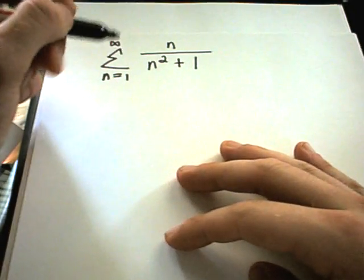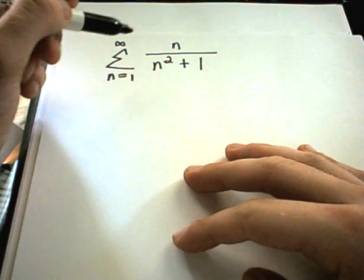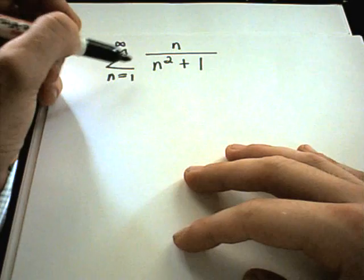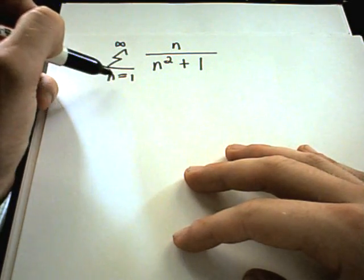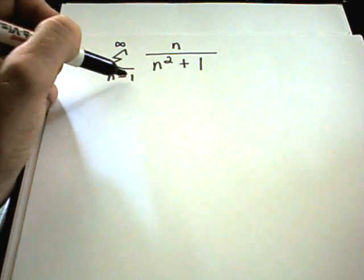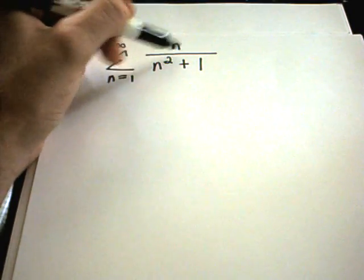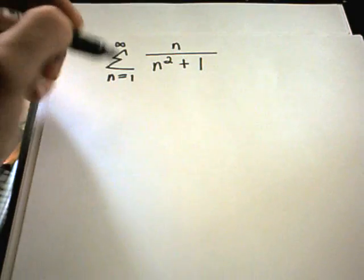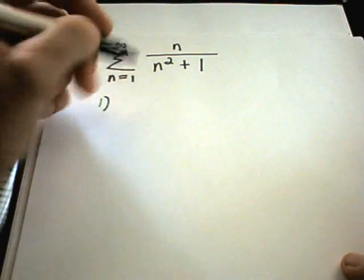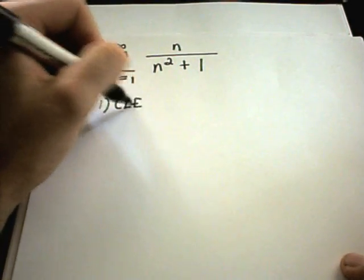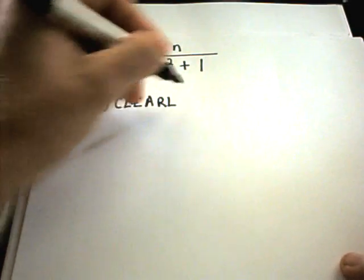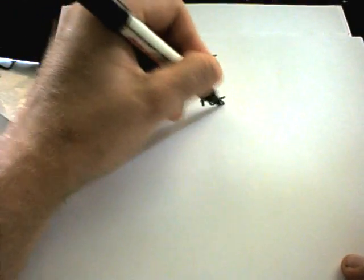So the idea here, we have to justify that this is a positive function, but that's pretty straightforward. I'm only plugging in positive numbers for n at the beginning, so the numbers on top are going to be positive and the numbers on the bottom are always going to be positive. So this is clearly going to be a positive function.